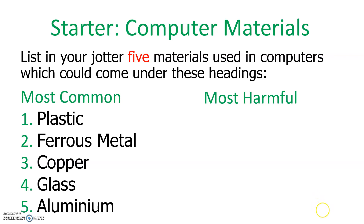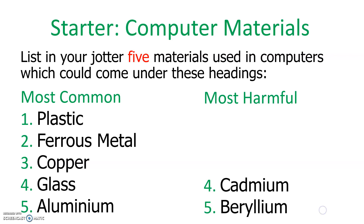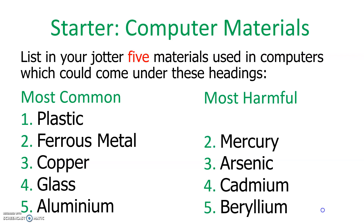Under the most harmful materials — these are materials you may not have commonly heard of before, so we're going to talk through what they are. The first is beryllium, which is the fifth most harmful. We've got something called cadmium, which I'll talk more about a little bit later on. We've got arsenic — you might have heard of that before; it's a type of poison.